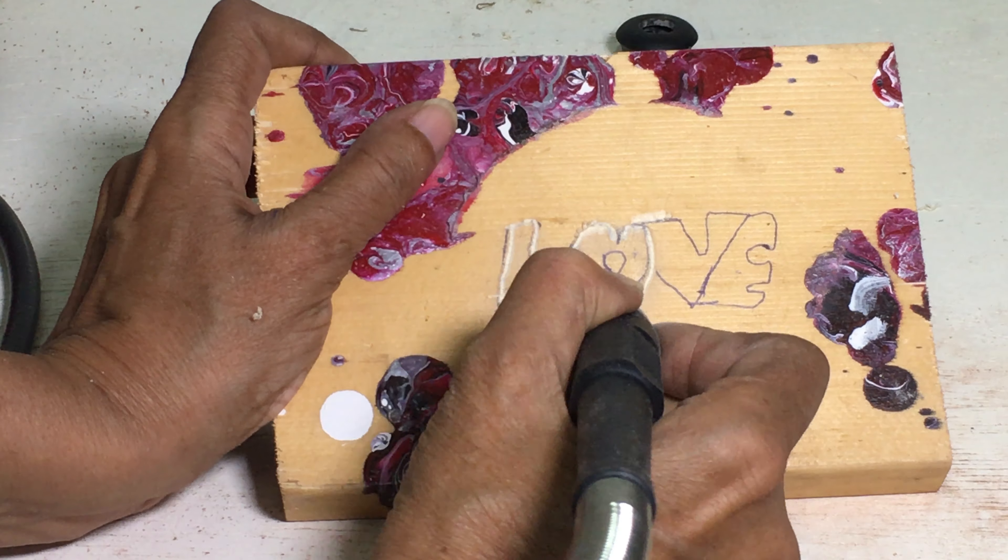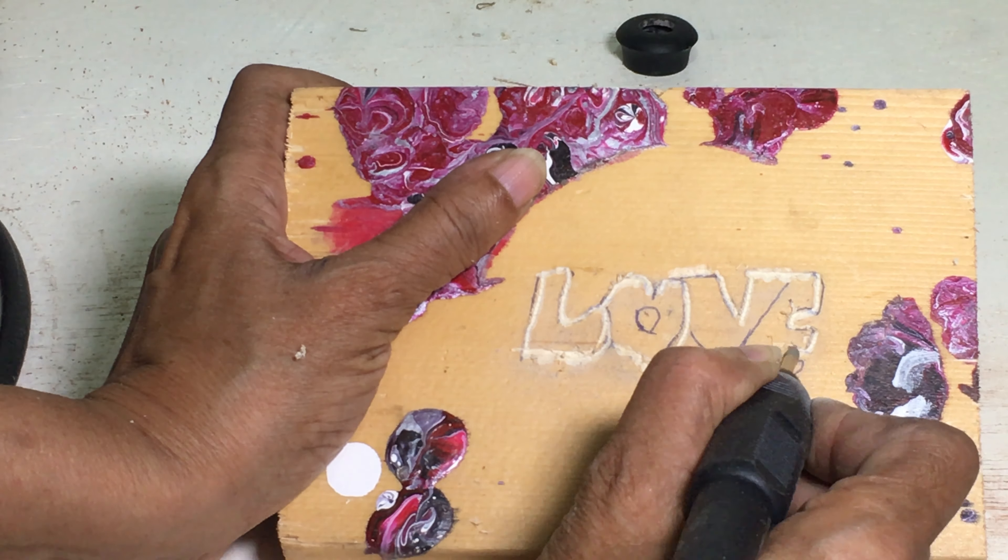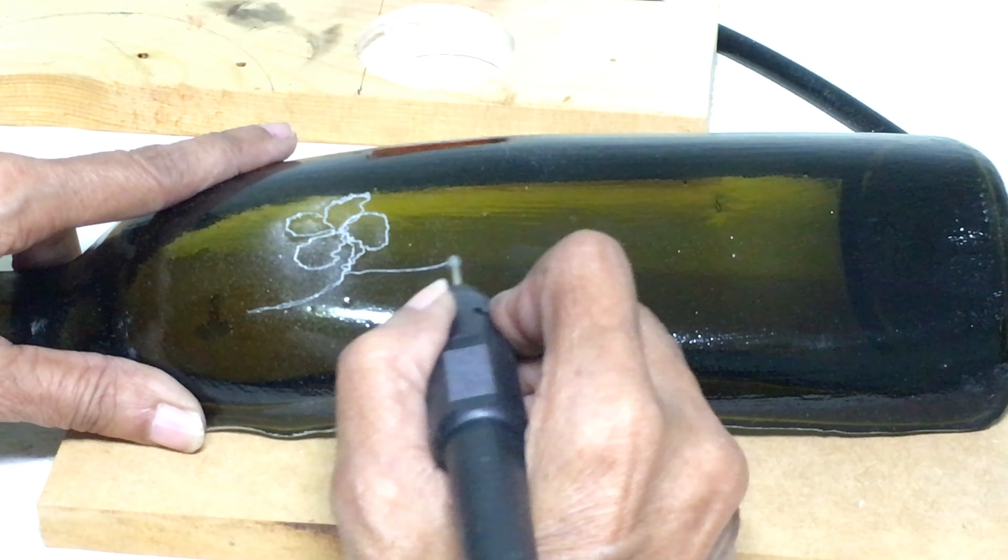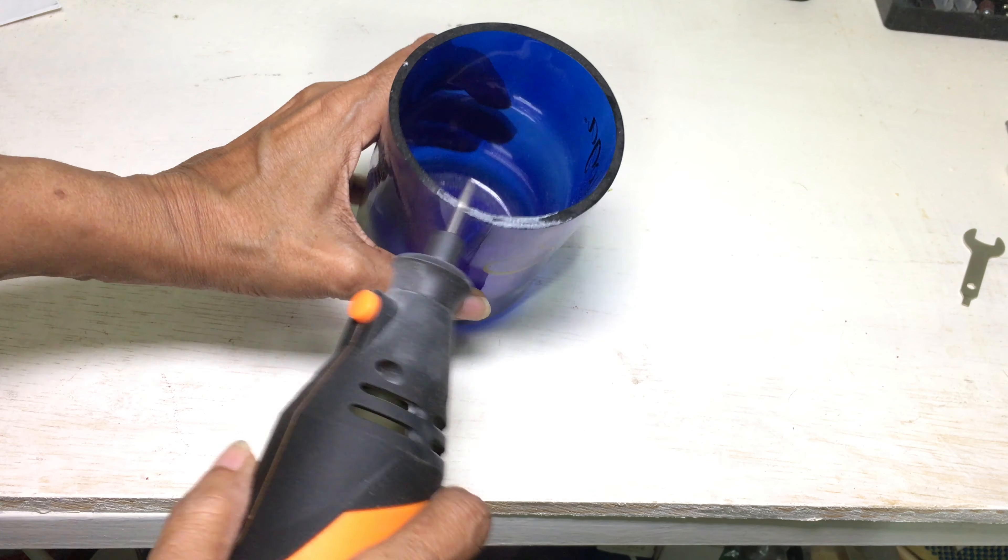The diamond coated bits can engrave on wood, metal, plastics and even glass. I use these bits for sanding my glass bottle projects.